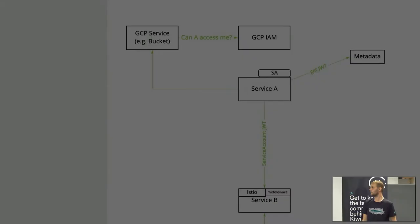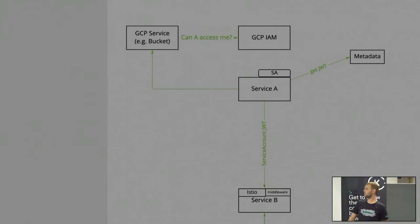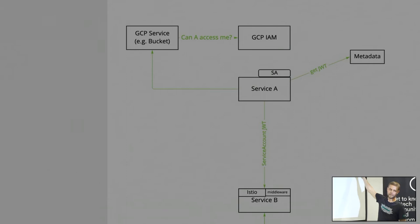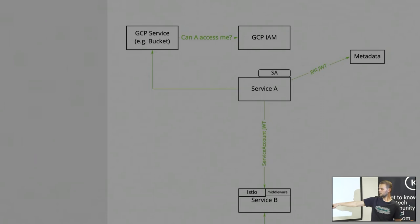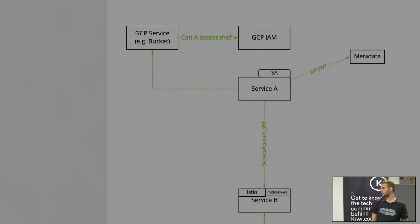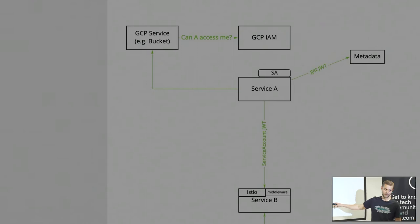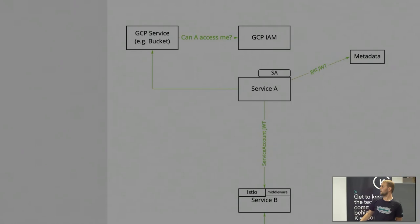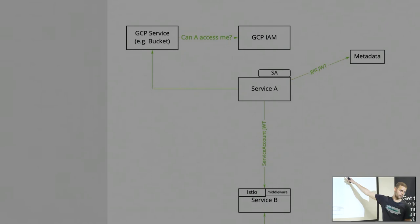The second example: you have service A and service B and they want to talk to each other. It's pretty similar — service A just asks for a token, passes it to service B, and service B can validate the token the same way the Google Cloud service verifies it. As I mentioned, you can have some middleware, an Istio sidecar, or put it in the application code. There are hundreds of different ways because it's so simple — just simple tokens, very easy to verify. This service doesn't have to know any secrets. Nothing to be leaked, and it works.